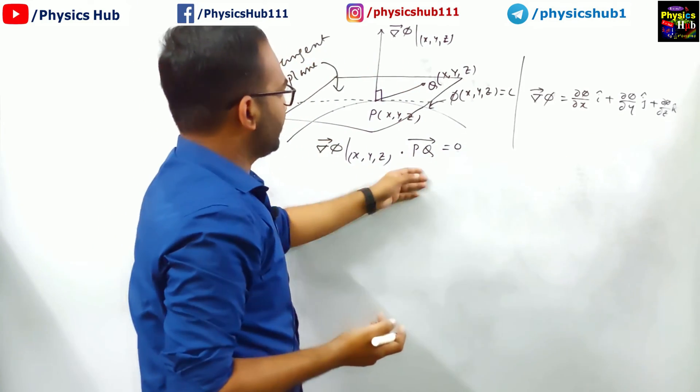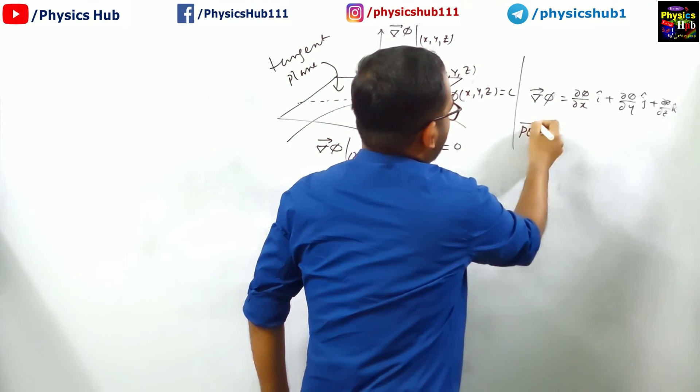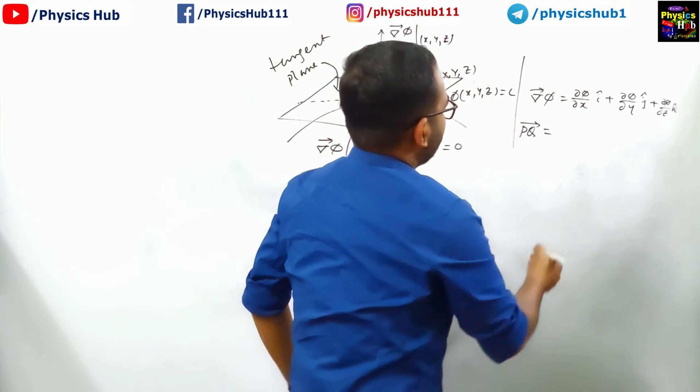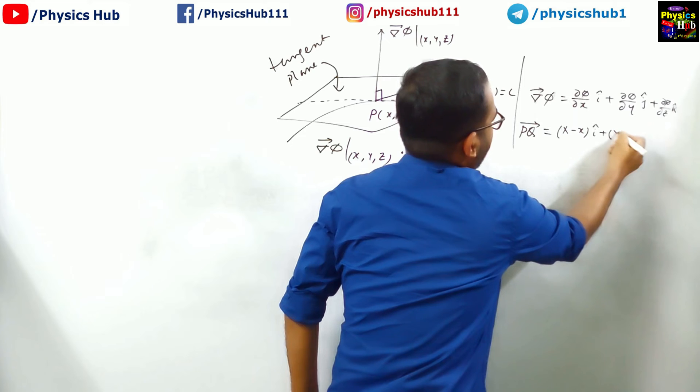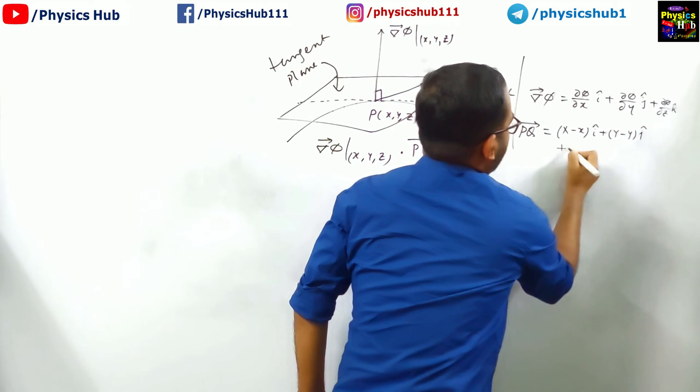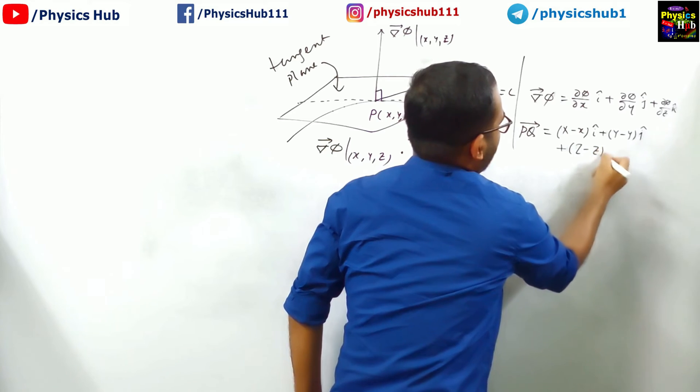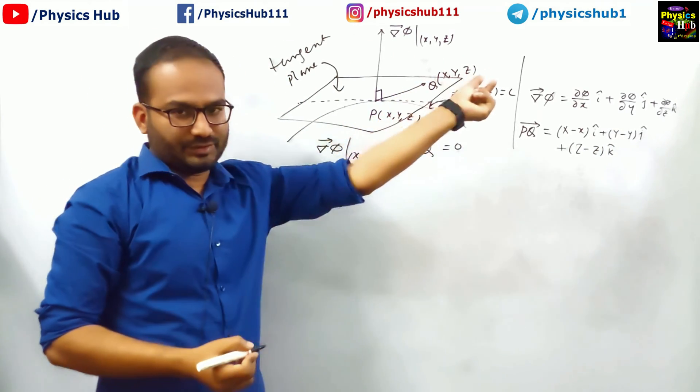Now, what is PQ? We can use coordinate geometry to get the value of PQ. PQ is a vector, so it is capital X minus small x i cap plus capital Y minus small y j cap plus capital Z minus small z k cap. This will be the value of this vector PQ.